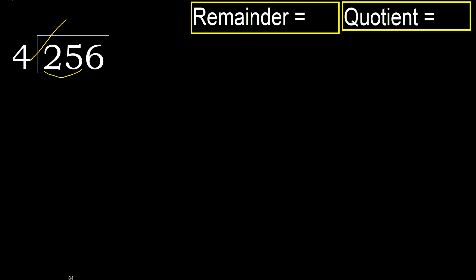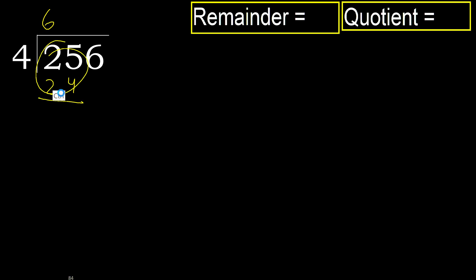4 multiplied by which number is nearest to 25 but not greater? 4 multiplied by 7 is 28 — 28 is greater. 4 multiplied by 6 is 24 — 24 is not greater. OK, subtract, next.